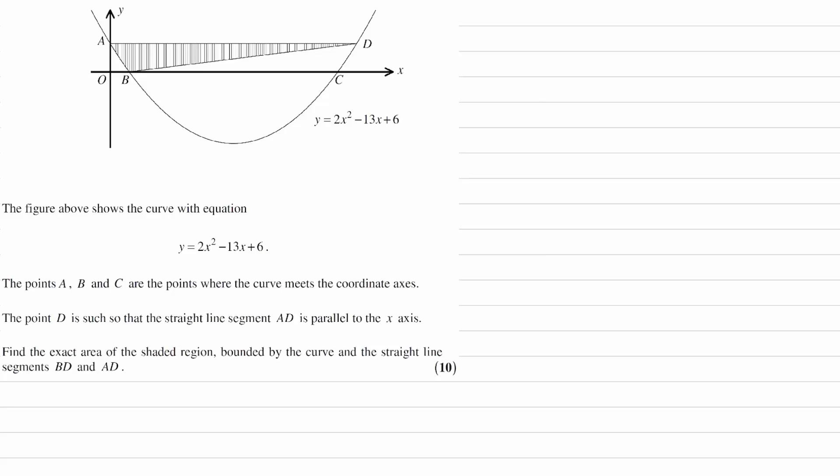The figure above shows the curve with equation y equals 2x squared minus 13x plus 6. Points A, B and C are the points where the curve meets a coordinate axis.